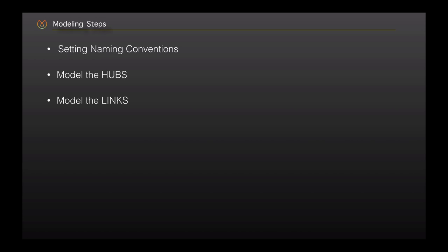Another step is the creation of the satellite tables. Satellites provide the context to each business key — meaning the hubs — as well as the link tables. First, we will regroup the satellites by rate of change, type of information, and the source system. Then we will establish the description around the business keys and hash keys, and the result of it, we will create the satellite tables.